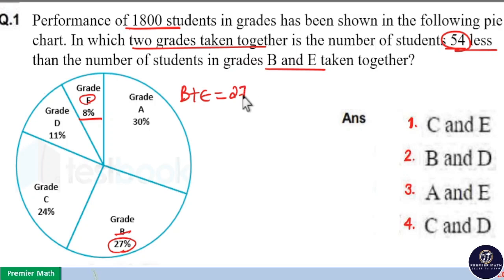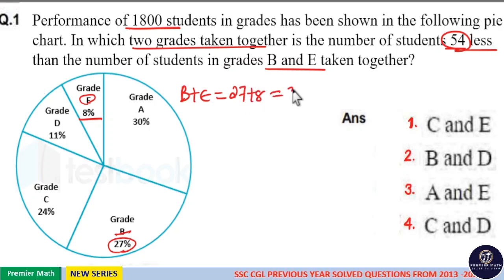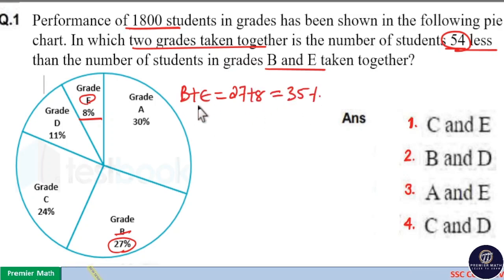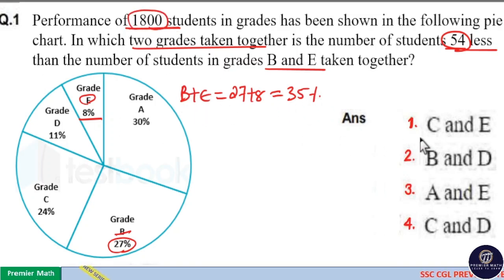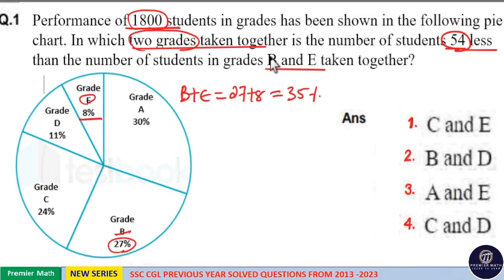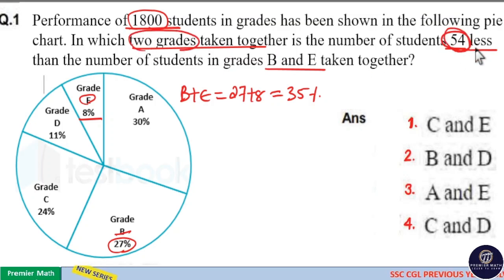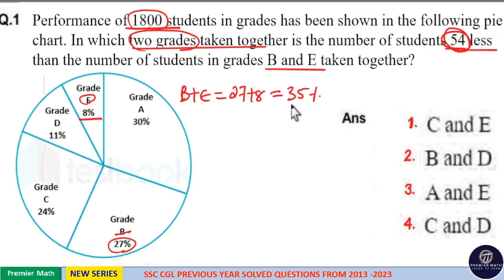Total 27 plus 8 percentage is equal to 35 percentage students. That is, in B and E taken together there are total 35 percentage of 1800 students. Now, we need two grades taken together which should be 54 less than the 35 percentage.